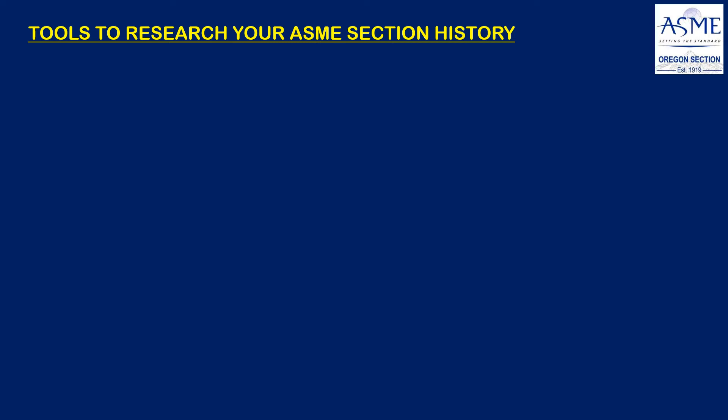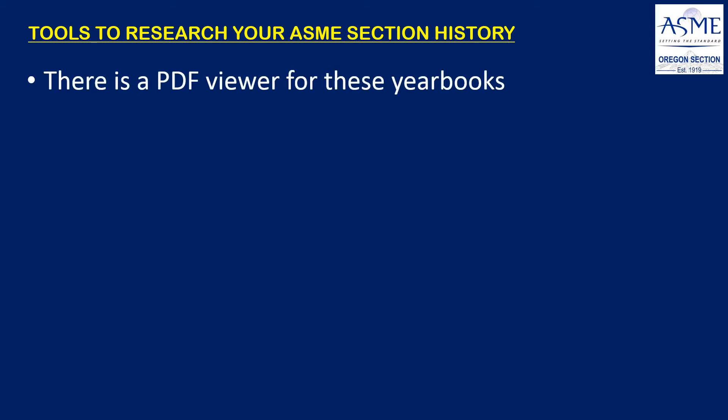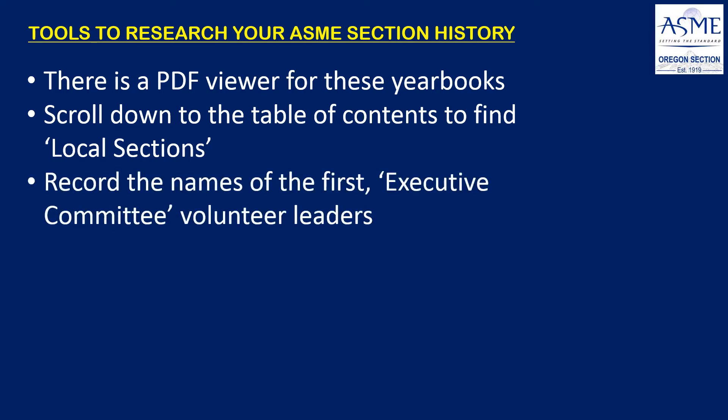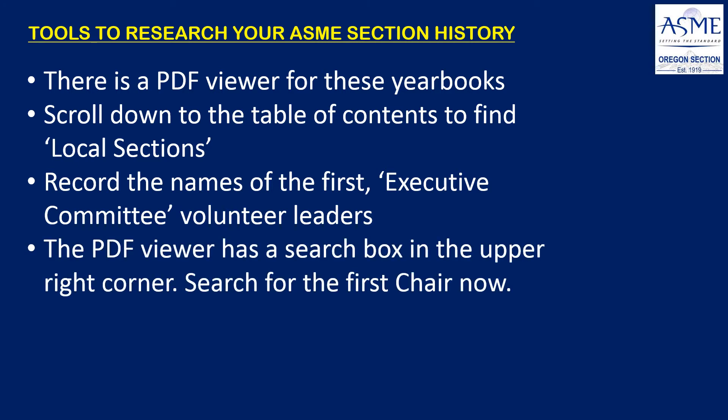The PDF viewer is pretty powerful. You can scroll down and just read information, but we're really looking in these first yearbooks for an area in the table of contents called local sections. Your goal is to record the names of the first volunteer leaders, which they call the executive committee. You can search for those names, cities, or other information while the viewer is open. It's good to get as much as possible from this book because it's considered a primary source — it was the official publication of ASME for that year.